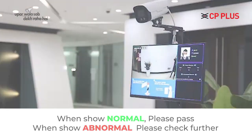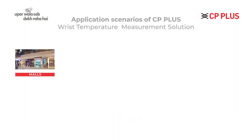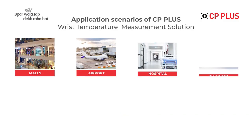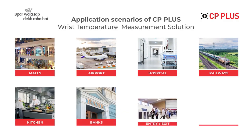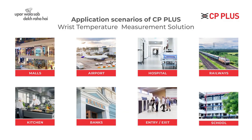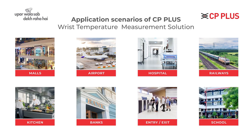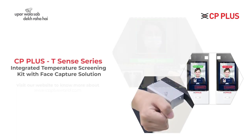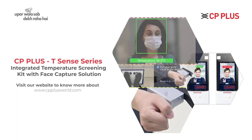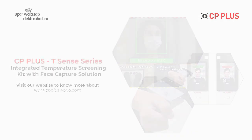The CP Plus wrist temperature measurement solution has wide applications. It can be used in IT companies, small factories, universities, campus office entrance lobbies, malls, hotels, and cinemas. This is a new cost-effective thermal solution for medium to small factories, malls, and companies with a few hundred people — or fewer than 500.